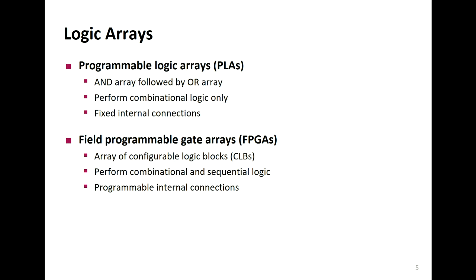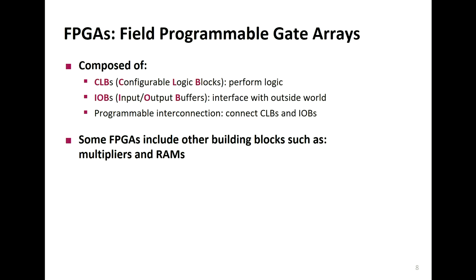FPGAs also have programmable internal connections. They're composed of configurable logic blocks that perform primary logic, and input-output buffers — IOBs — that act as gateways mapping your circuit to external inputs like switches or buttons, and outputs like LEDs, USB storage, or a display. The programmable interconnections within FPGAs connect the CLBs and IOBs together to form the complete implementation. Some FPGAs also include additional building blocks like memory and multipliers — in fact, the board we're using this semester does contain multipliers, pre-built since they're complicated to implement.